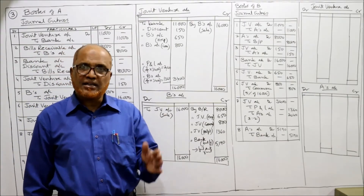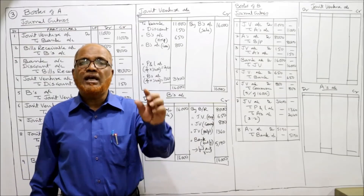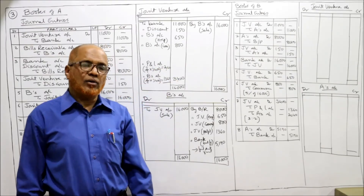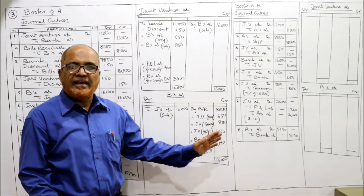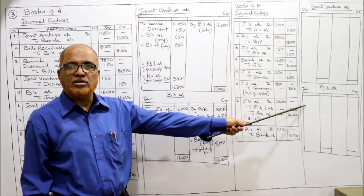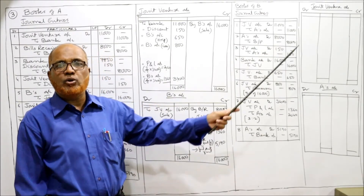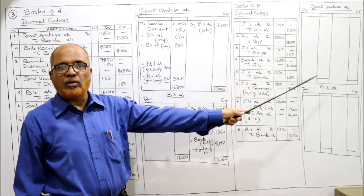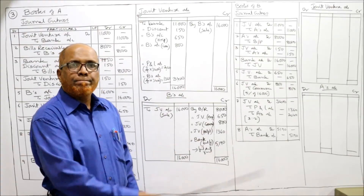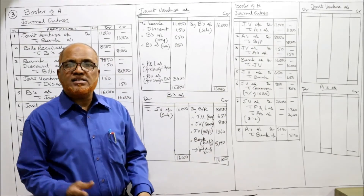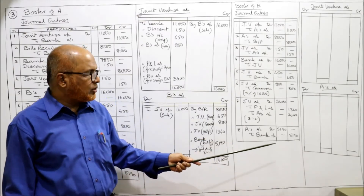Final amount: 5,190 rupees is sent by B to A. Entry: A's Account Dr. to Bank - 5,190. This amount we get only after preparing A's account. You have to make two accounts: joint venture account and A's account. From the joint venture account we get the profit entry, and from A's account we get the final amount paid to A of 5,190.